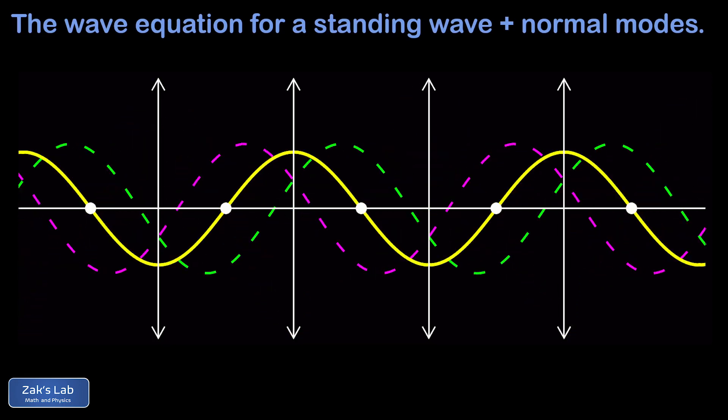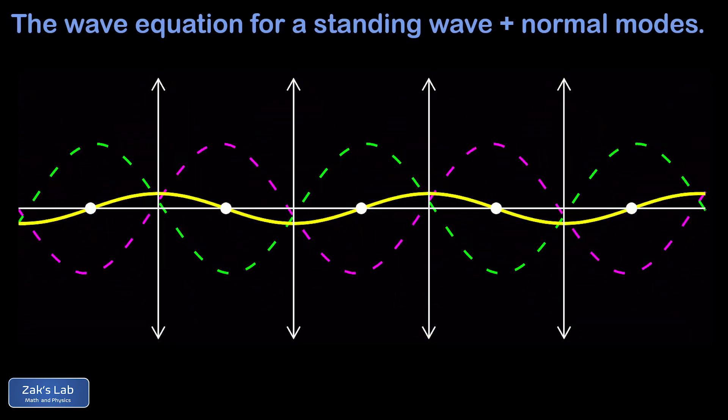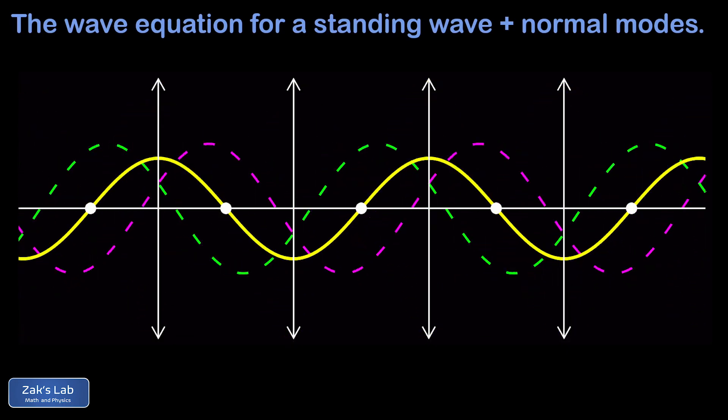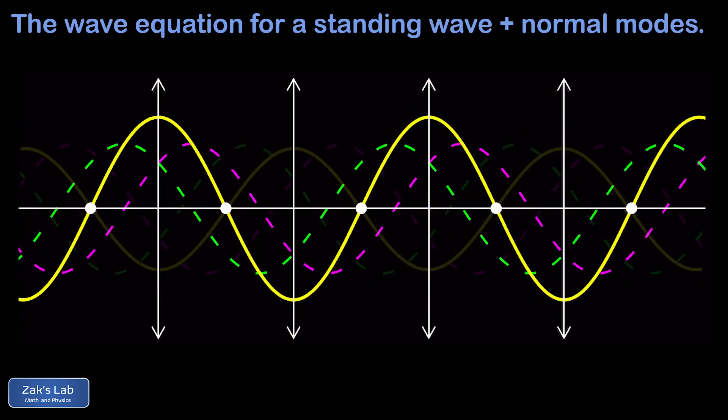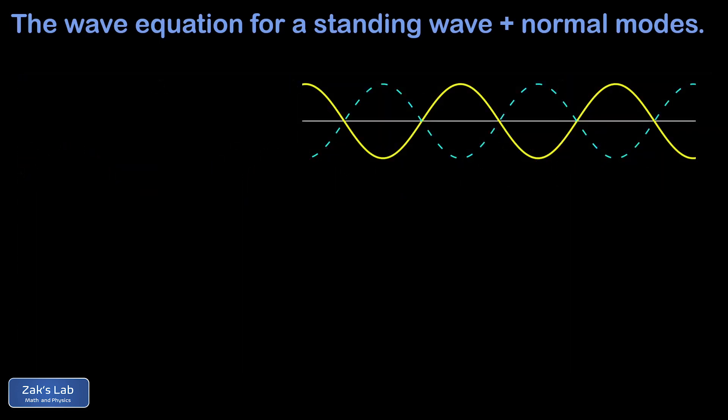In this video, we're interested in how a standing wave can arise on a string that's fixed at both ends as a result of rightward-traveling waves interfering constructively with their leftward-traveling reflections. So the first thing to work out is just the math of how to combine a rightward-moving wave with its leftward-moving reflection.